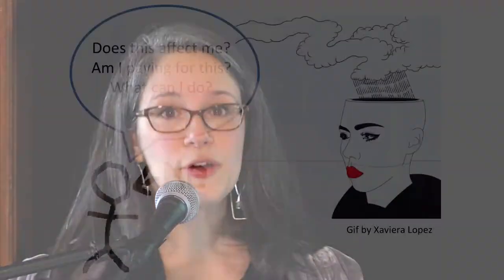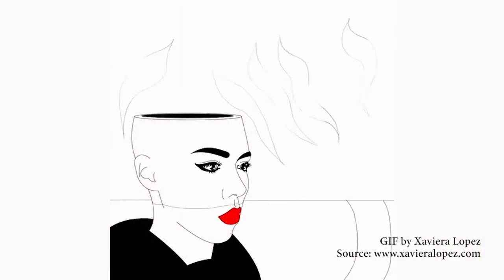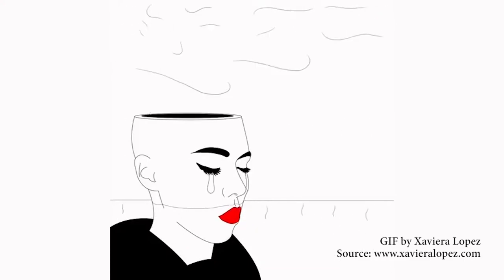Average Joe citizen is not going to be thinking about ecosystem services or why you should be maintaining stream flow or other kinds of scientific thoughts. They're probably thinking: What does this mean to me? How is this relevant to my life? Do I have to pay money for this? Is there something I can do about this? And I have this beautiful gif by Javiera Lopez — it's the hydrologic cycle that she's put together in a gif.